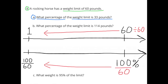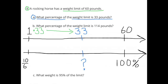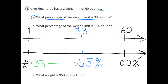100% divided by 60 equals 100 over 60. I can reduce that fraction by dividing both by 10, which gives 10 over 6, or 10 sixths. They're asking what percentage of the weight limit is 33 pounds, so I multiply 1 pound times 33 to get 33 pounds, and I multiply 10 sixths times 33, which equals 55%. So 33 pounds is 55% of the 60-pound weight limit.